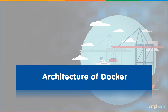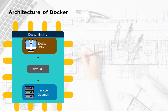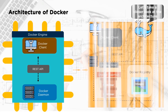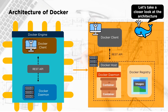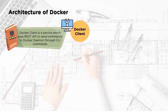A Docker engine consists of two major components: Docker client and Docker daemon, connected via REST API. The Docker client has no subcomponents, while Docker daemon consists of a Docker host, Docker daemon, Docker registry, and Docker images. Docker client is a service that uses REST API to send commands to Docker daemon through CLI commands, which is the primary mode of communication between the two.